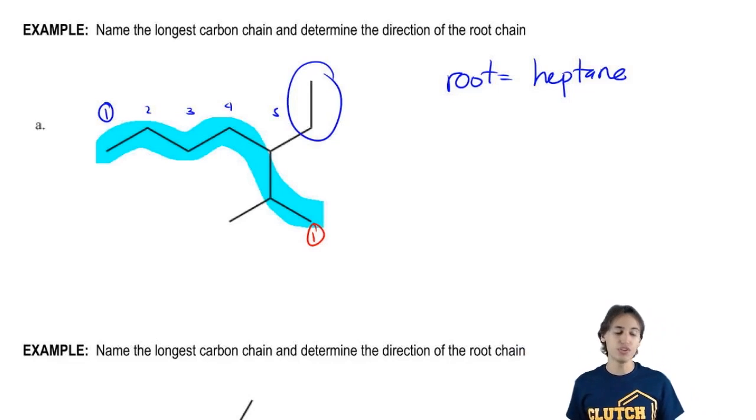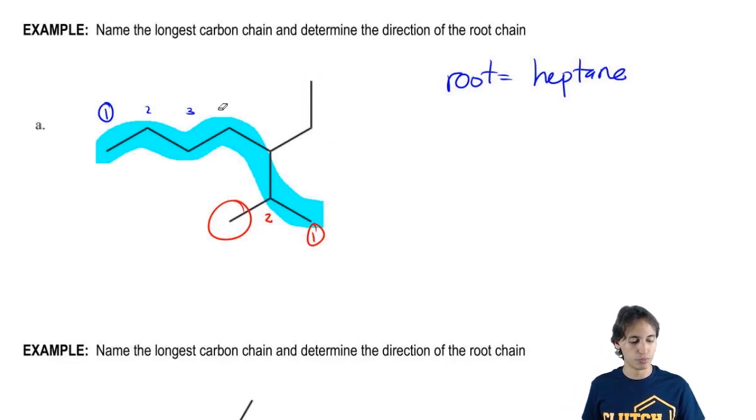Now if I start numbering from the red direction, I get to two and I already have a substituent. Do you see that? So I get to the second carbon, I already have a branch coming off. So which of these is going to give me the lower number? Which of them is going to be the one that gives me the direction? And it's going to be red. So I'm going to erase the blue. The blue is wrong.